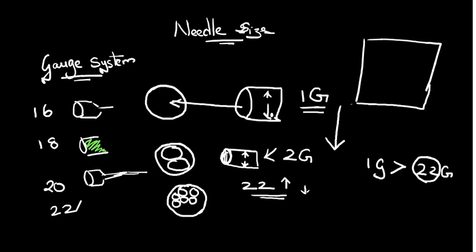So that is what the gauge system basically is. Again, just to look at the gauges: 16 is for gray needles, then 18 is for green, 20 is for pink, 22 is for blue, and 24 is for yellow. I'm not going to draw the whole thing, but that is what it is. So yellow will be 24, then blue hub will be 22.